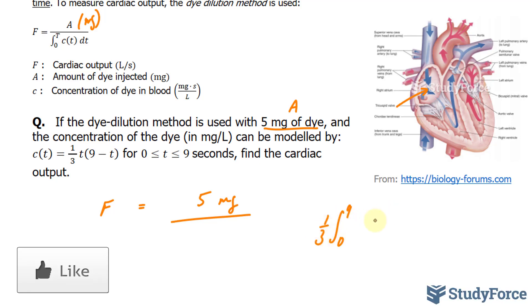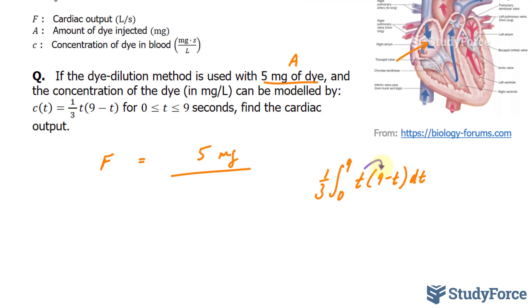A third will be taken out. t times (9 minus t) dt. We'll expand this, where we end up with 9t minus t to the power of 2.